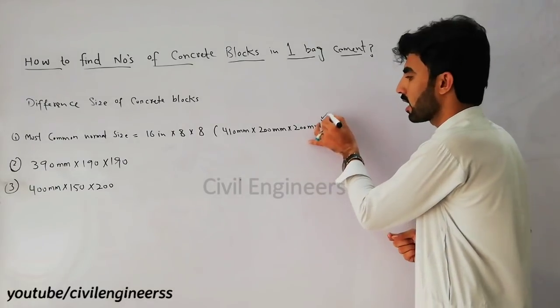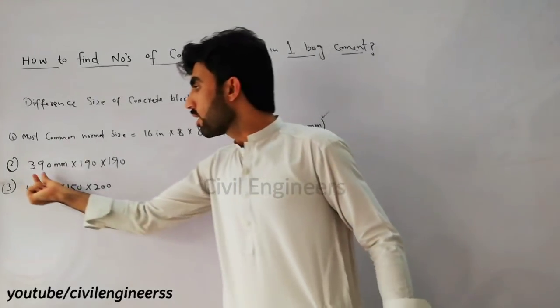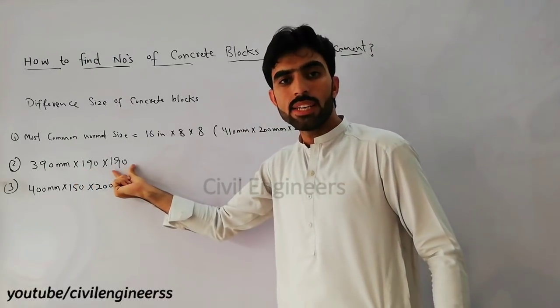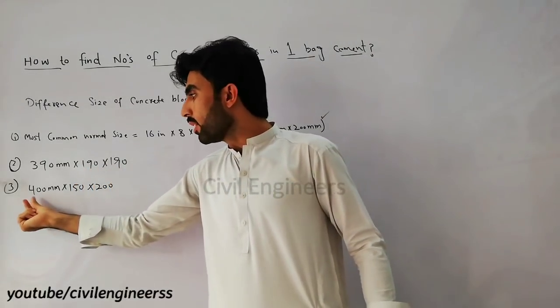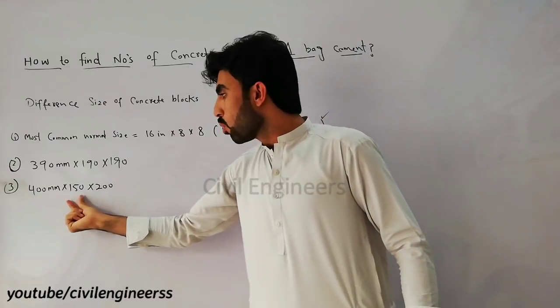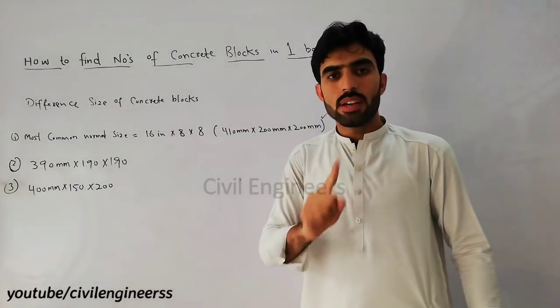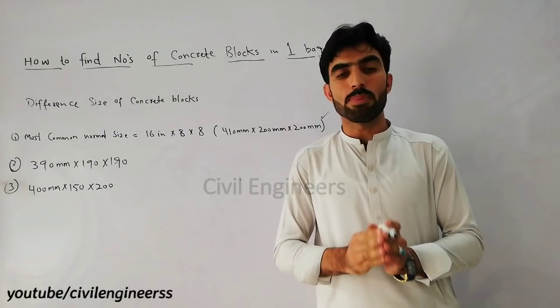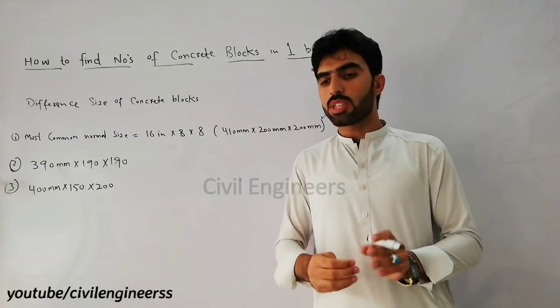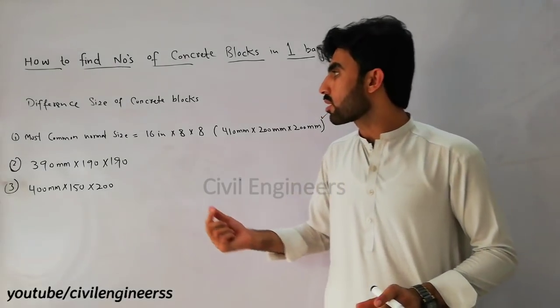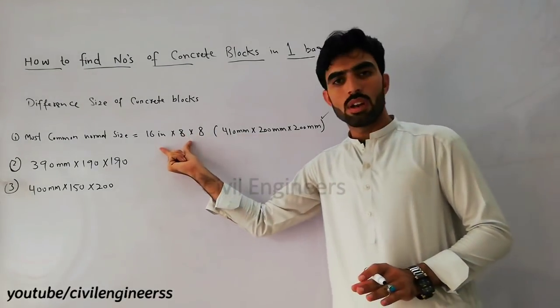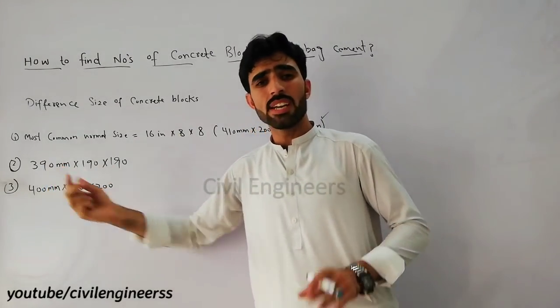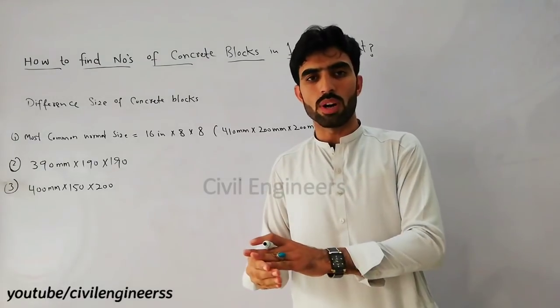The other sizes are 390mm by 190mm by 190mm, and the third one is 400mm by 150mm by 200mm. Remember that the size of concrete block depends on the country. Here in Pakistan we use this size, in Dubai they use this one, and in India they use another one.